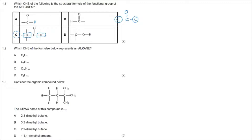Question 1.2 asks which formula represents an alkane. When given formulae in that form, we check which subscribes to CnH2n+2. The correct answer is option C, because there are 14 carbons: 14 × 2 = 28, plus 2 = 30 hydrogens. For an alkane, we look for something with the formula CnH2n+2.